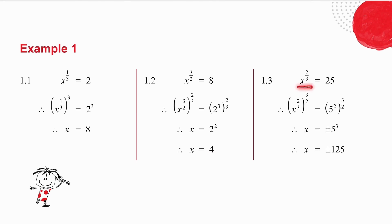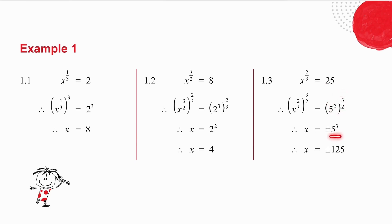I do exactly the same thing for 1.3. I raise both sides to the power 3 over 2, because 2 over 3 times 3 over 2 is 1. I write 25 as 5 squared, multiply the powers, and get 5 cubed — in other words, 125. Because this involves x to the power 2 over 3, meaning the cube root of x squared, and because it's squared, my answer has plus or minus. When the top of the fraction is an even number, your answer is going to be plus or minus.